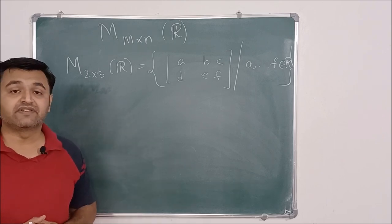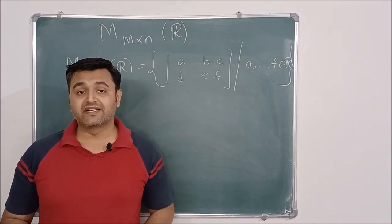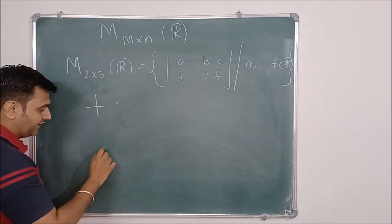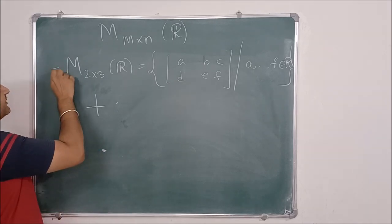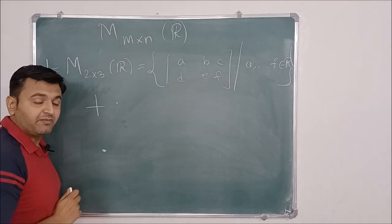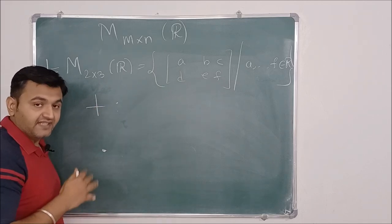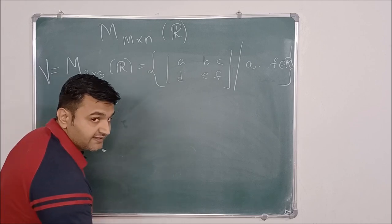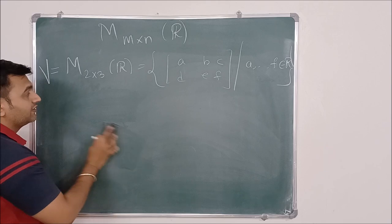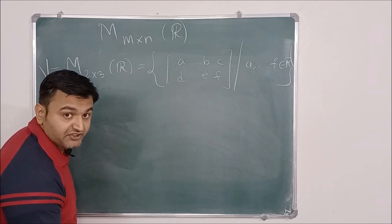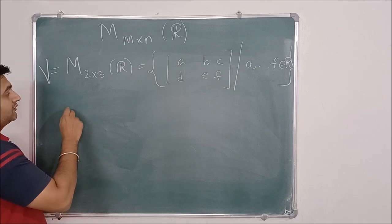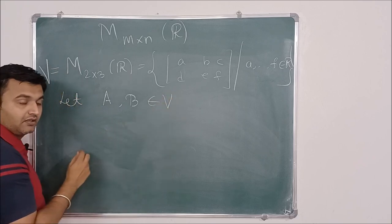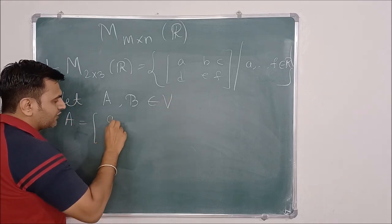To check whether a set forms a vector space or not, we should have a vector addition operation defined on it and a scalar multiplication operation. Only then can we check the properties. So I need to define addition. Let A and B be two matrices in the set V.